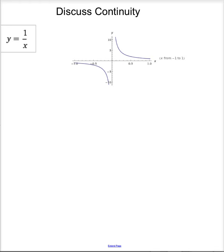Let's discuss the continuity of y equals one over x. It's continuous everywhere except where x equals zero because that makes my denominator zero. Can't have that. So we can say it's continuous from negative infinity to zero, not including zero, and then from zero to positive infinity. This is a non-removable discontinuity.